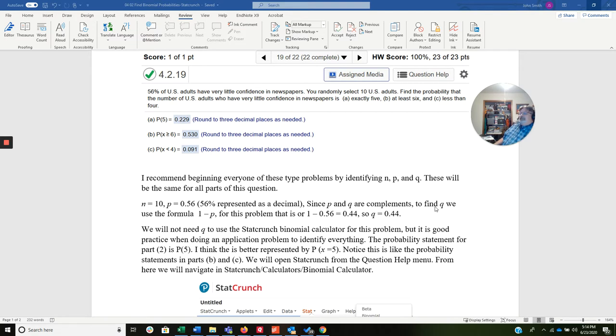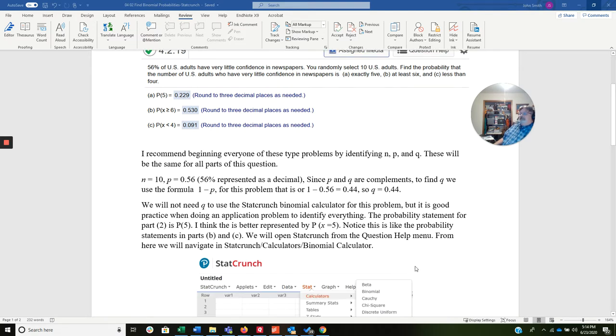So again, we don't need Q, but let's go ahead and write the probability state for part 2. They have as P is 5. I'm going to write it this way right here. I think it's better represented. P, X equals 5. So this is like the other ones. We'll keep like the probability statements. They're already there.